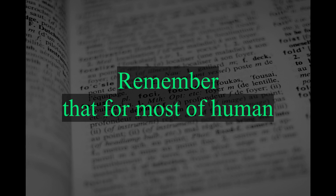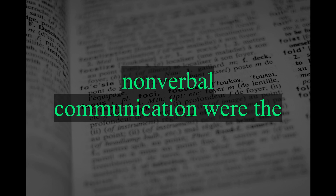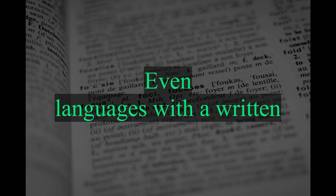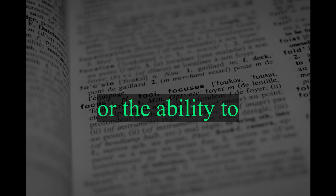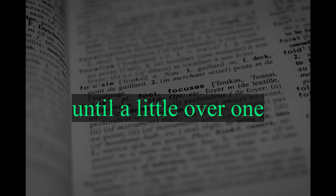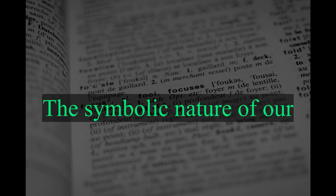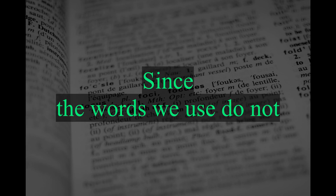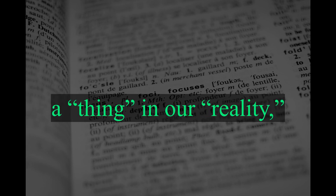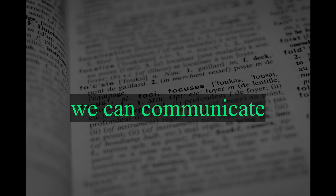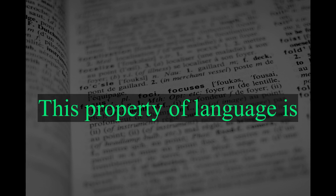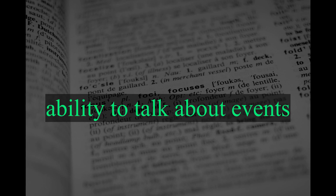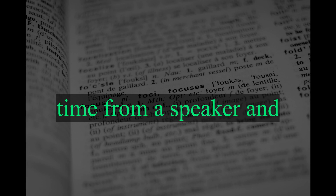Remember that for most of human history, the spoken word and non-verbal communication were the primary means of communication. Even languages with a written component didn't see widespread literacy or the ability to read and write until a little over 100 years ago. The symbolic nature of our communication is a quality unique to humans. Since the words we use do not have to correspond directly to a thing in our reality, we can communicate in abstractions. This property of language is called displacement, and specifically refers to our ability to talk about events that are removed in space or time from a speaker and situation.